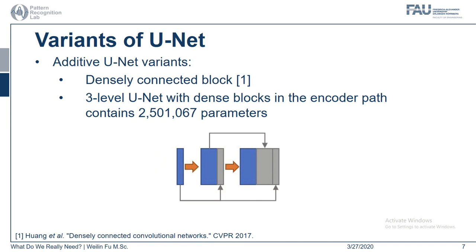The densely connected block also makes a popular modification. In a dense block, all preceding activations are concatenated into later ones, also allowing for easier gradient backpropagation. A three-level UNET with dense blocks in the encoding path contains 2 million parameters — 20 times the amount of parameters of the vanilla UNET.